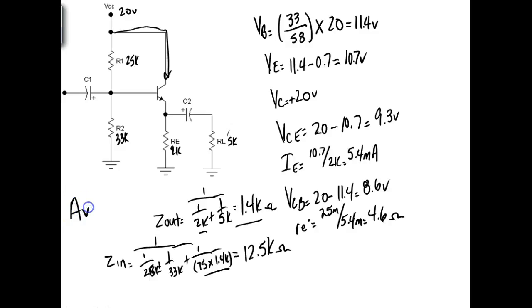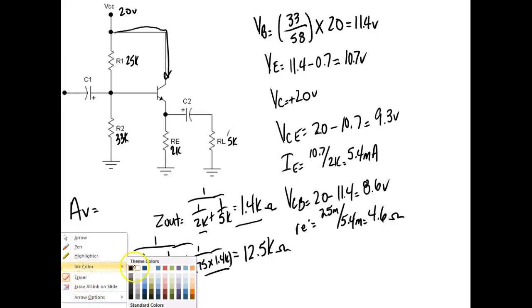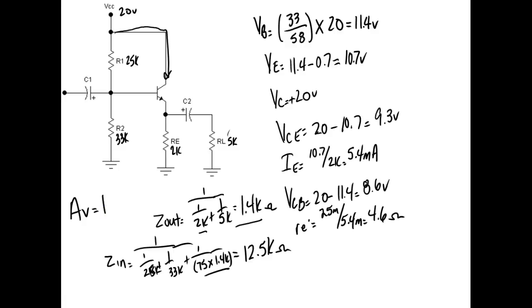So my AV, my voltage gain, is going to be the big one over the little one. I'm sorry, voltage gain is equal to what? One, y'all right, not zero. Voltage gain is equal to one, but understand it's not going to be one, it's going to be slightly less. AI is going to be equal to Zout, it's going to be the big one over the little one. So it's going to be Zin over Zout. So AI is going to be equal to 12.5k divided by 1.4k. What does that come up and get me? Nine. Is that what the key says? 8.9.